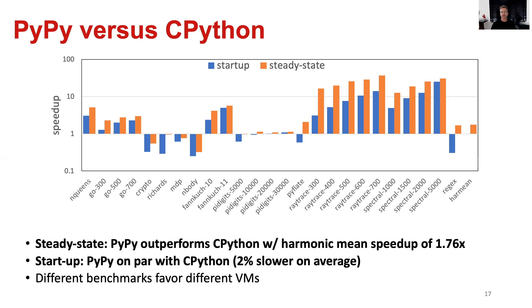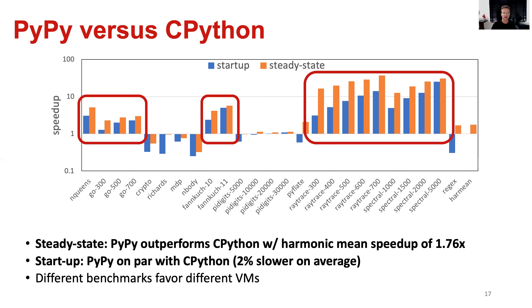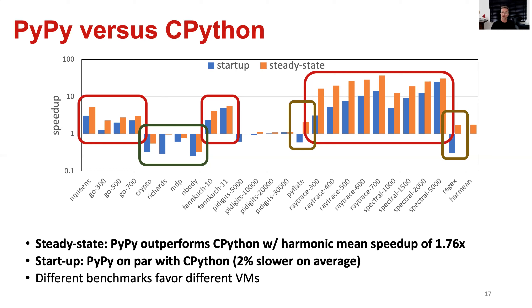Different benchmarks favor different VMs. Benchmarks such as Nqueens, Go, Fannkuch, RayTrace, and Spectral show PyPy as clearly the better performing Python VM. For other benchmarks like Crypto, Richards, MDP, and Nbody, CPython outperforms PyPy for both startup and steady state performance. There are also benchmarks — PyPy and RegEx being examples — where CPython is better for startup performance, whereas PyPy performs better for steady state performance.